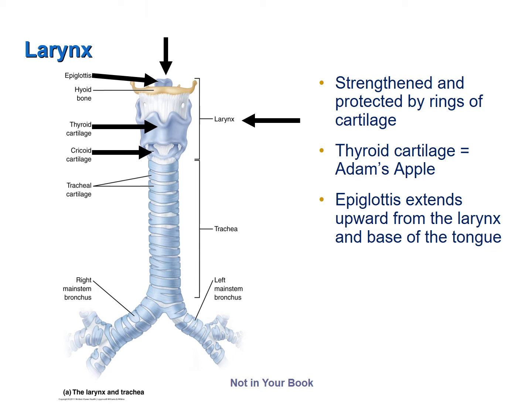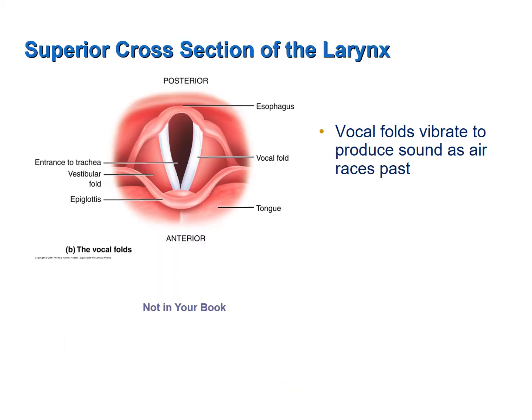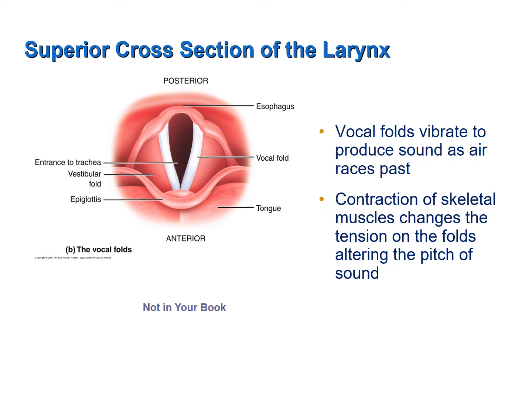A superior view of the larynx cross-section shows the vocal folds, or true vocal cords. As air passes through the larynx, the vocal folds vibrate to produce sound. Pitch is altered by contraction of voluntary skeletal muscles that change the tension on the folds, and also by varying the distance between the vocal folds. Men tend to have deeper voices due to the effect of testosterone, which makes the vocal folds thicker.